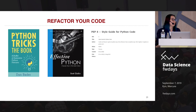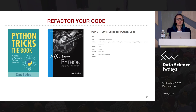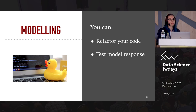If you don't know where to start, I'd recommend these books: Python Tricks, Effective Python, and PEP8 Style Guide. If you write models in Python, you can refer to those books to learn how to write more Pythonic code and write in a better style.